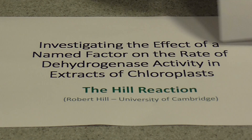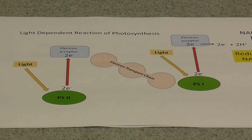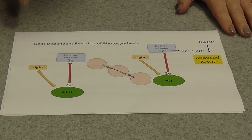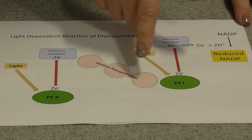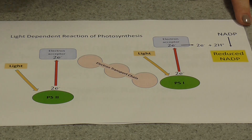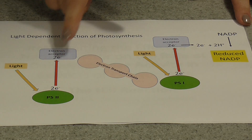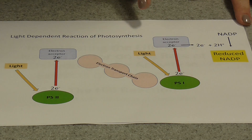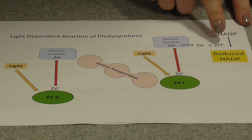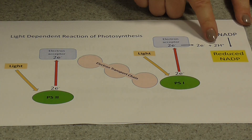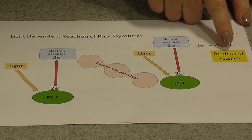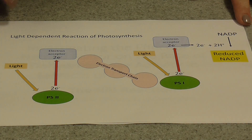Just to remind you what the light-dependent reactions involve: basically we have the release of electrons from chlorophyll. The electrons then flow down an electron transport chain from photosystem 2 to photosystem 1. Ultimately the electrons end up reducing a coenzyme called NADP, along with hydrogen from water, to form reduced NADP, which is one of the products of the light-dependent reaction needed for the light-independent reaction.